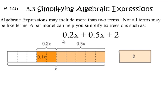Today we're going to continue adding and subtracting algebraic terms. We are now in section 3.3 in the textbook on page 145. If you would have your textbook open and your spiral, we're going to be counting down about 10 examples today.